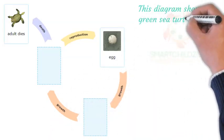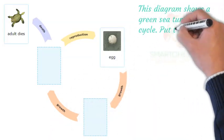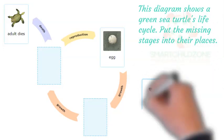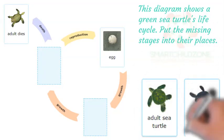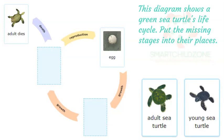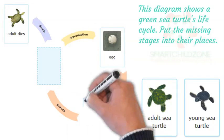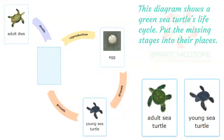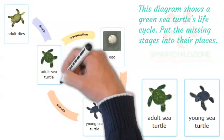This diagram shows a green sea turtle's life cycle. Put the missing stages into their places. The young sea turtle stage comes after the hatchling stage. The adult sea turtle stage comes after the young sea turtle stage.